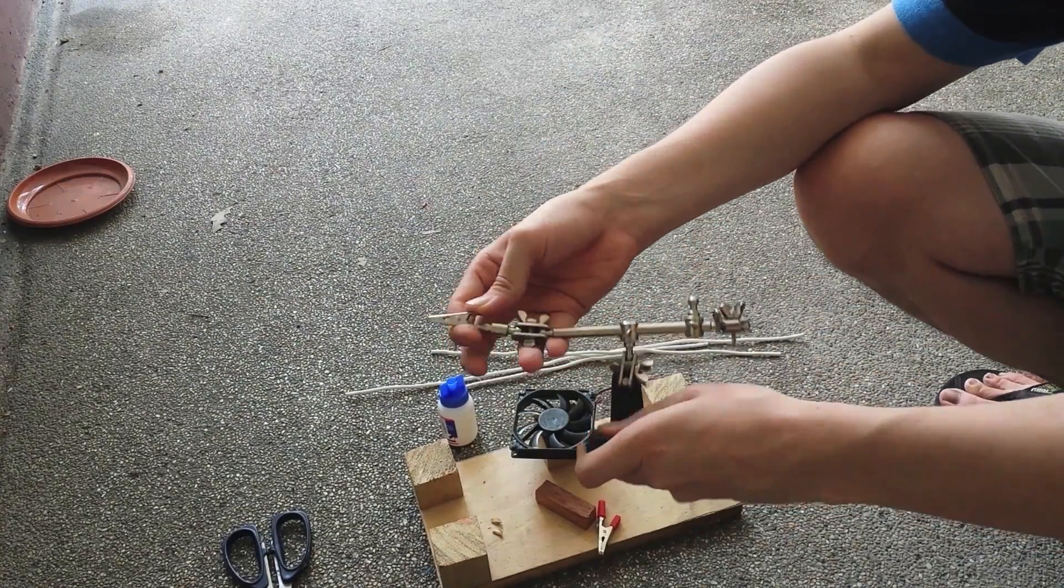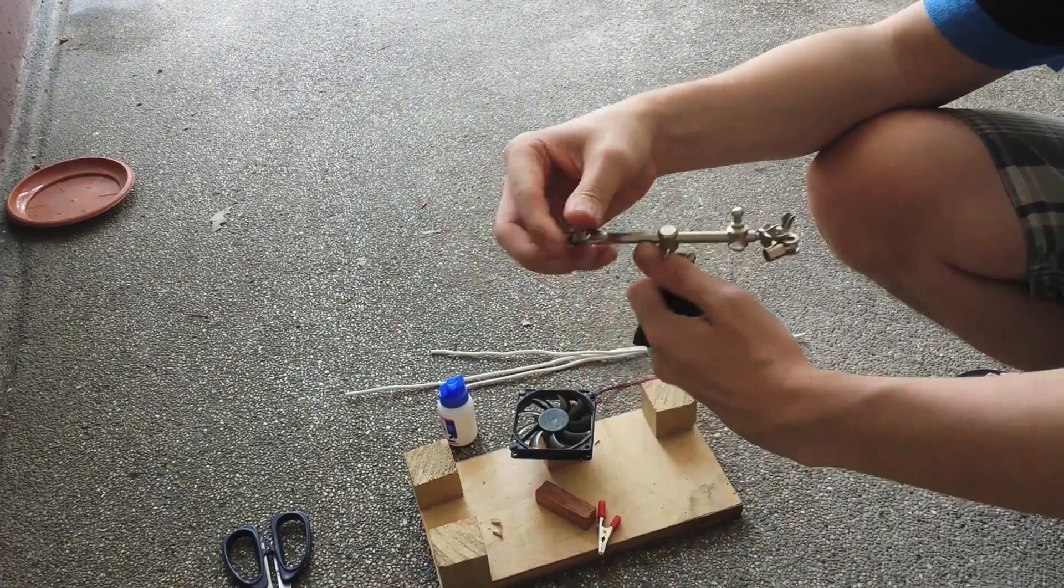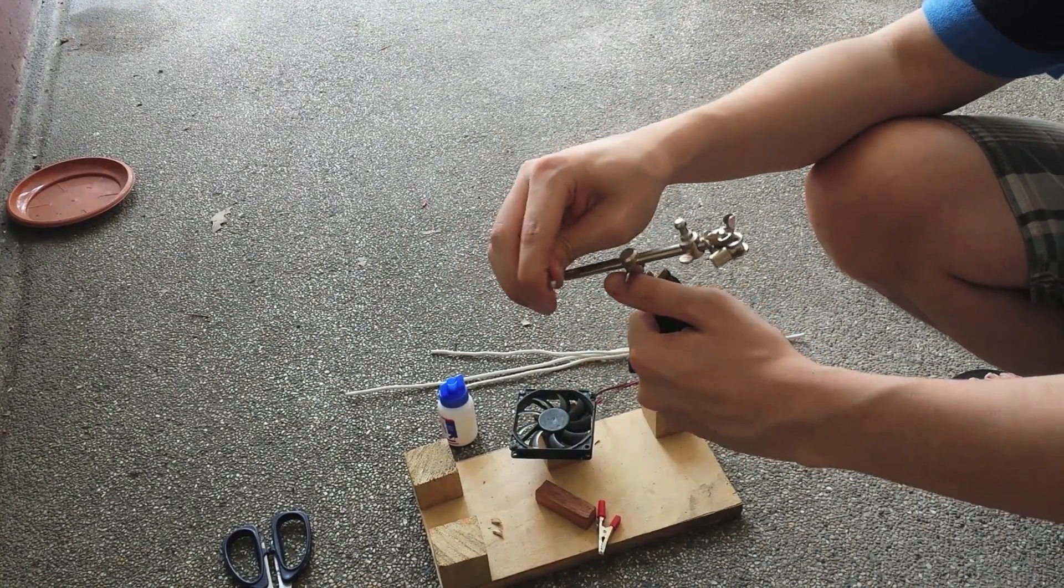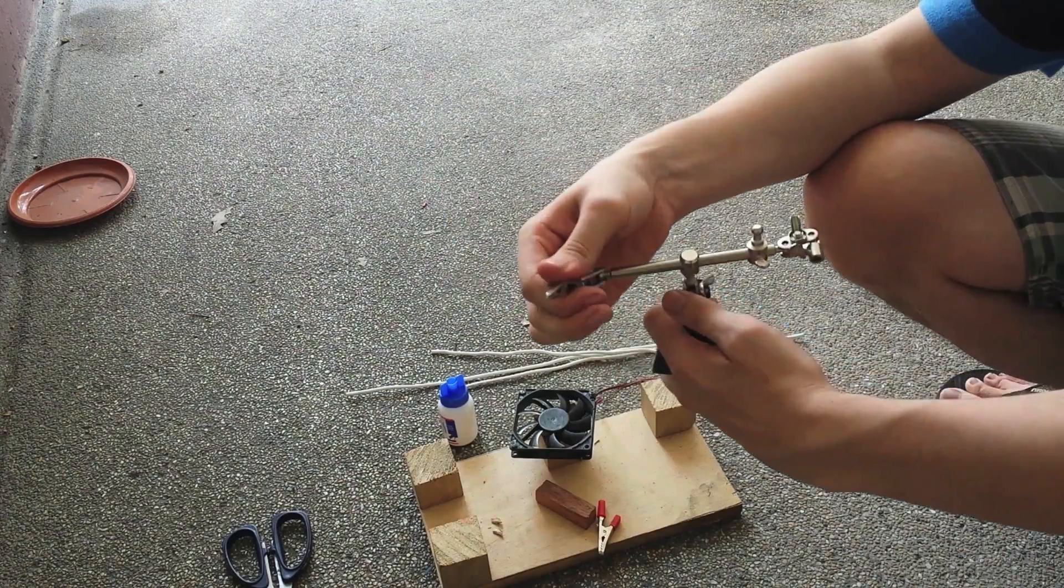Today I'm going to be making my own helping hands. This is the classic one that most people have. It's got a fairly good range of movement and holds onto whatever you're trying to solder. I do have one of the arms missing, but you get the idea.